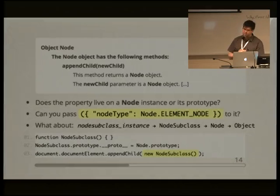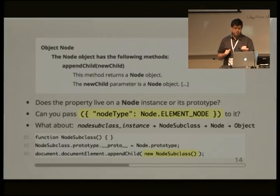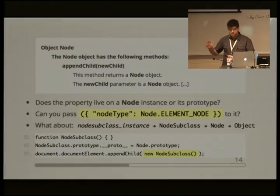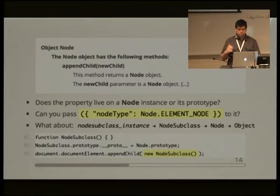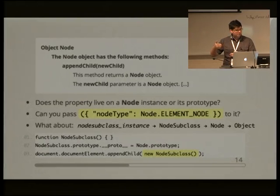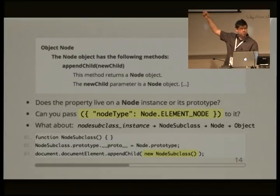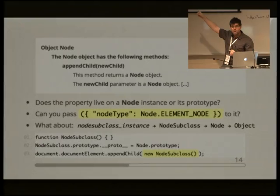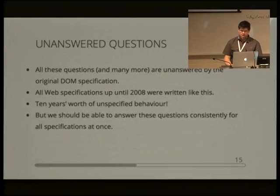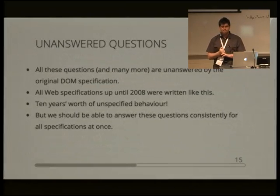For an operation like appendChild, firstly it doesn't say where this property is meant to live — it probably makes sense on the node prototype since it's usable for all node instances, but it doesn't say that. It also says the newChild parameter is a node object, but what does that mean? What if you pass a JavaScript object that looks like a node with a nodeType property? Is that sufficient? What if it inherits from the actual node prototype through a prototype chain? Does that count? All of these questions are unanswered.